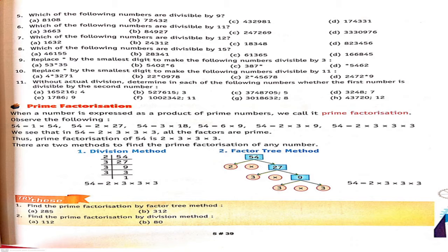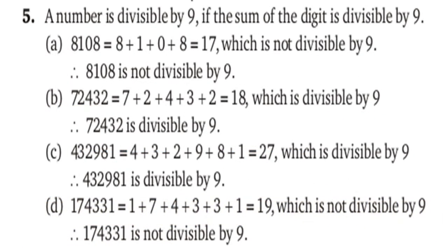Question number 5 — which of the following numbers are divisible by 9? Apply the condition: if the sum of the digits is divisible by 9. For part A, the number is 8108; sum of digits is 17. Since 17 is not divisible by 9, 8108 is not divisible by 9. Similarly, solve the other parts.